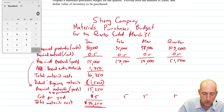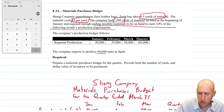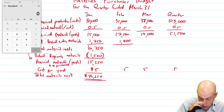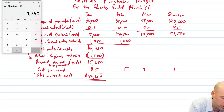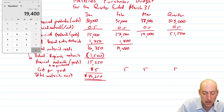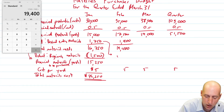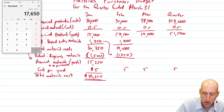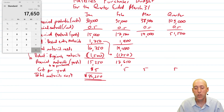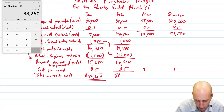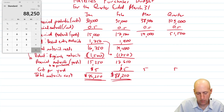Let's continue on to February. The desired ending materials for February is 10% of the following month — 10% of March's requirement. 10% of March's 19,000 yards is 1,900 yards. So total material needs for February: 17,500 plus 1,900 = 19,400. We then deduct the beginning materials for February, which equals the ending materials from January: 1,750. So 19,400 minus 1,750 means we need to purchase 17,650 yards of material in February. At $5 per yard, the total materials cost for February is $88,250.